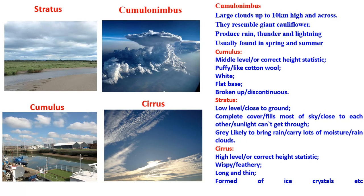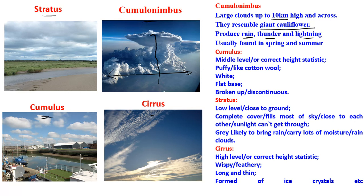Let's look at the individual features. First, cumulonimbus is a low-level cloud that extends up to 10 kilometers high and up to 10 kilometers across in width — it's very giant. It resembles a giant cauliflower, produces rain, thunder, and lightning, and is usually found in spring and summer.